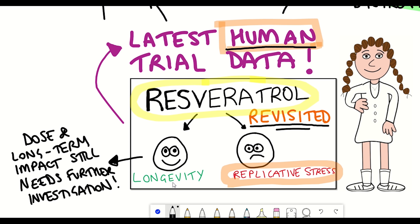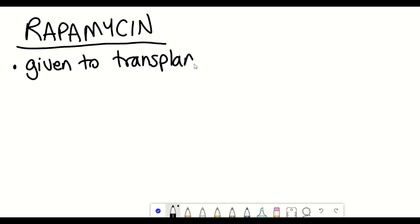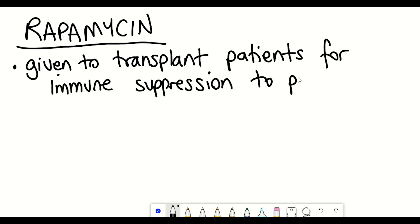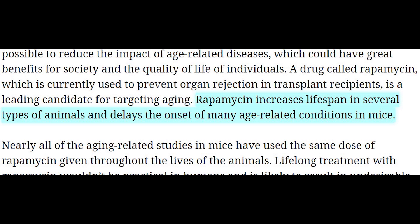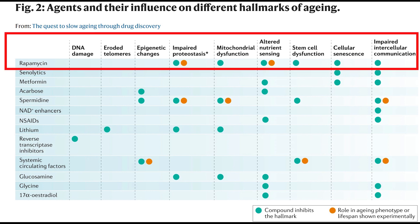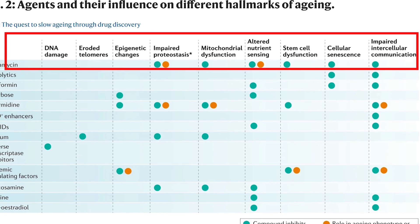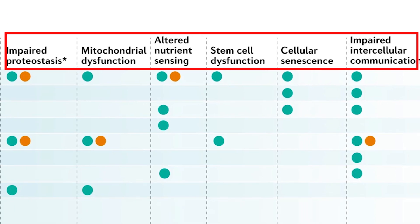And so the last compound that's made it onto my list is rapamycin, that is currently given to patients undergoing transplants as a means of immune suppression to prevent rejection of new organs. So rapamycin has quite an interesting history. And there's a lot of data that has shown that rapamycin increases lifespan in several model organisms, such as yeast, worms, and mice, and also delays the onset of many age-related conditions in mice. This is nicely demonstrated in this table here, whereby you can see rapamycin impinges on many different hallmarks of aging, including impaired proteostasis, mitochondrial dysfunction, altered nutrient sensing, stem cell dysfunction, cellular senescence, and impaired intercellular communication.